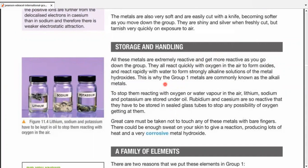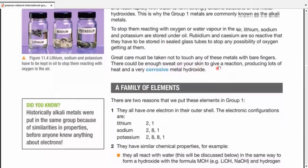To stop them reacting with oxygen or water vapor in the air, lithium, sodium, and potassium are stored under oil. Rubidium and cesium are so reactive, they have to be stored in sealed glass tubes to stop any possibility of oxygen getting in them. Great care must be taken not to touch any of these metals with bare fingers. They could gain enough sweat on your skin to give a reaction, producing lots of heat and a pretty corrosive metal hydroxide that can easily eat up your skin.